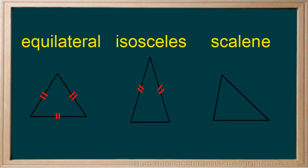To summarize, there are three types of triangles classified by the length of their sides: the equilateral, the isosceles, and the scalene.